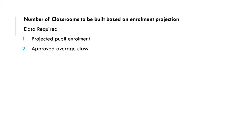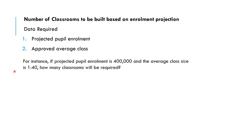To calculate the number of classrooms to be built based on enrollment projection data, you require two pieces of data: the projected pupil (PPU) enrollment and the approved average class size. For instance, if the projected PPU enrollment is 400,000 and the average class size is 1:40 — meaning one teacher to 40 pupils — how many classrooms will be required?